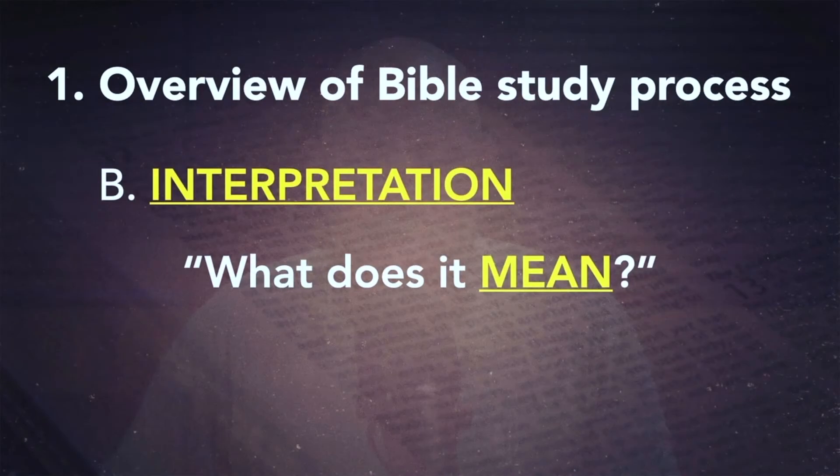Now let's move to letter B on your outline. We started with observation — what do I see. Now the second part is interpretation: what does it mean? I don't start in interpretation, and I don't end there — this is the middle ground that helps me get to where I need to go. Before I understand, I have to learn how to see. I have to take in all the facts that are in the passage, and then I can begin to understand what is being said. What does it mean?